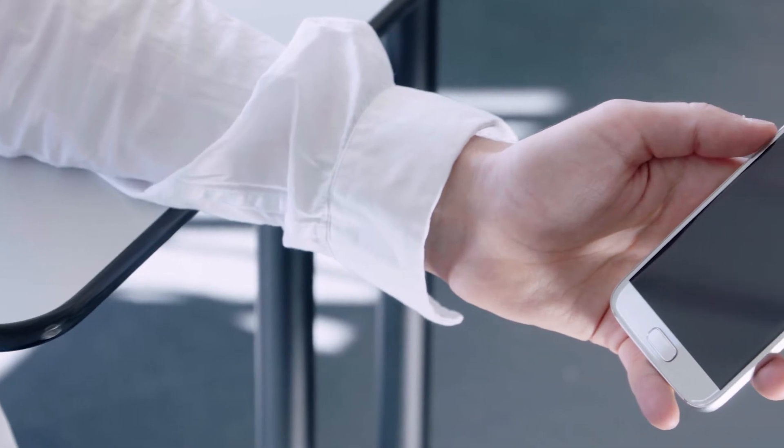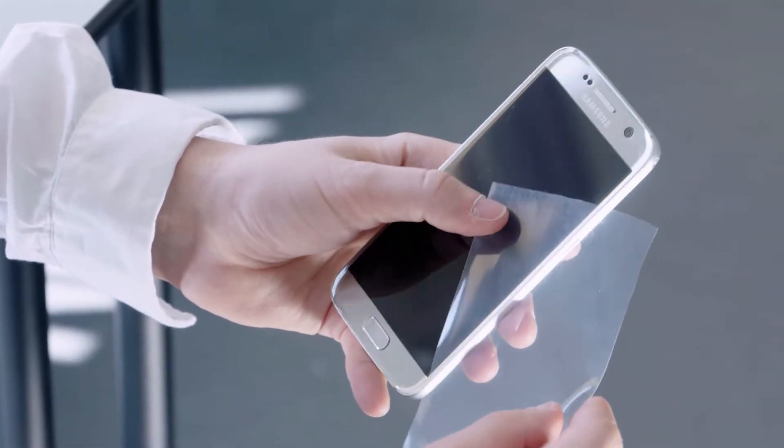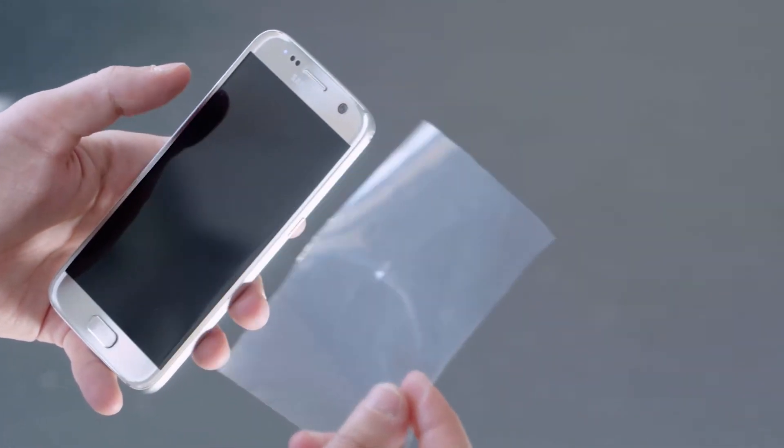The problem today is that current manufacturing technologies can only produce on rigid substrates like glass. If we had new manufacturing technologies, we could actually produce those layers also on plastics or even on paper materials.